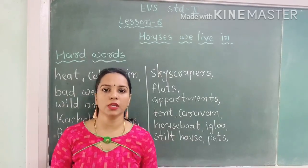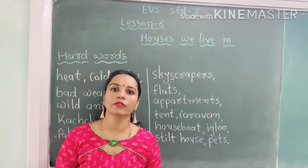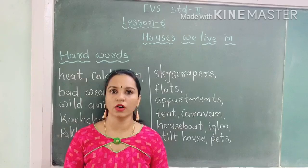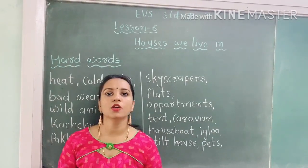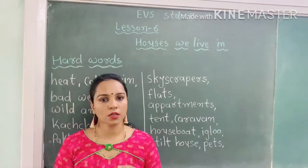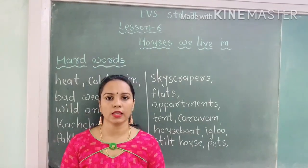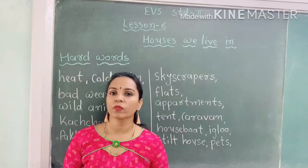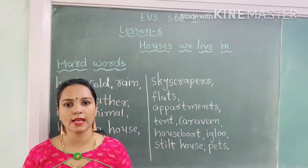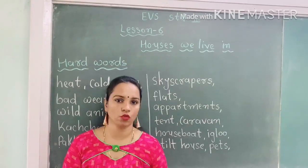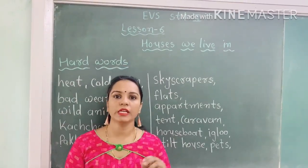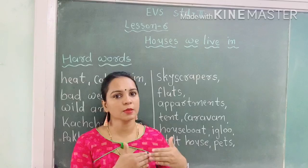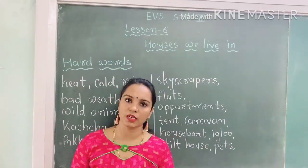All the houses that we live in are constructed according to the weather that we feel in our state and in our country. वो house उस state या उस country के weather के according बनाए जाते हैं. अगर किसी जगह पे बारिश ज्यादा होती है तो वो अलग तरह के house बनाते हैं. अगर किसी जगह पे snowfall ज्यादा होता है तो वहाँ पे भी हमारे जैसे houses नहीं होते. तो आज हमें different types of places and different types of houses समझना है.